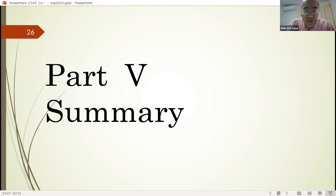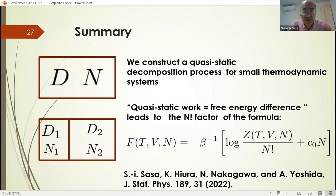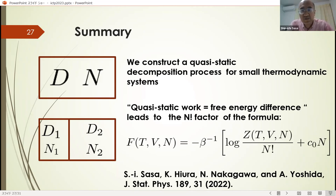Now I summarize my talk. We construct a quasi-static decomposition process for small thermodynamic systems. We assume that the free energy difference is equal to the quasi-static work. Then we can derive the N-factorial factor in the formula. Thank you for your attention.